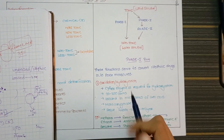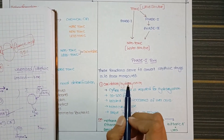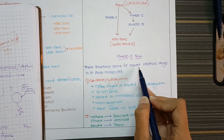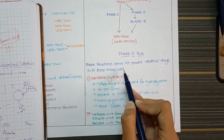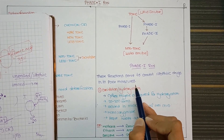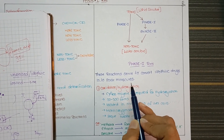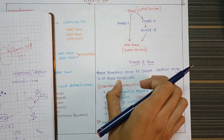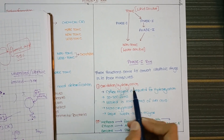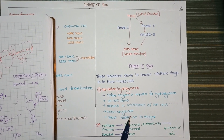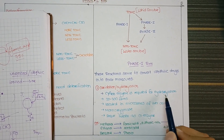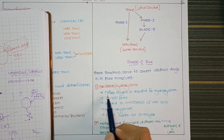Phase 1 reactions are of three types: oxidation, reduction, and hydrolysis. These reactions serve to convert lipophilic drugs into polar molecules so they can be excreted. Phase 1 reactions are the main motor for this conversion. In oxidation reactions, a key reagent is cytochrome P450 enzyme. Cytochrome P450 catalyzes hydroxylation, which is also called oxidation.